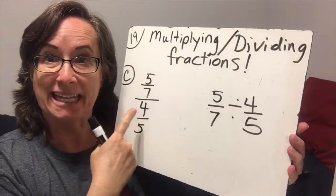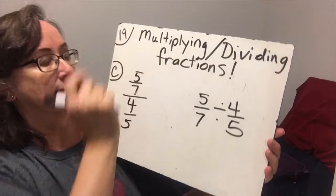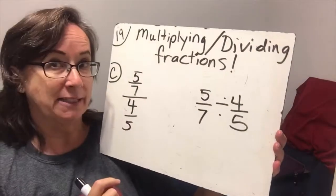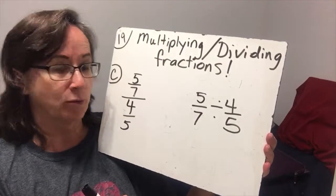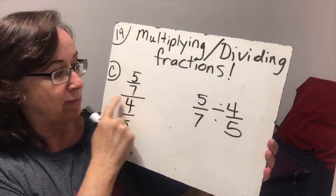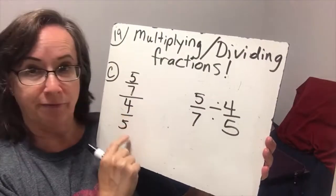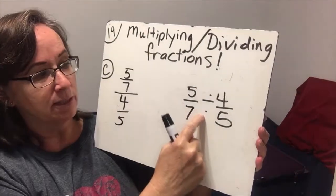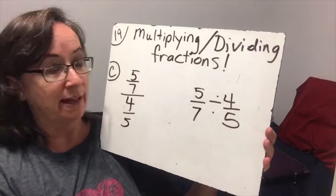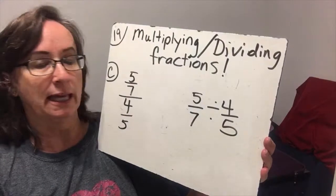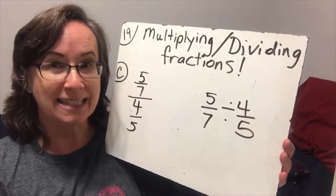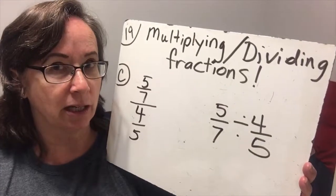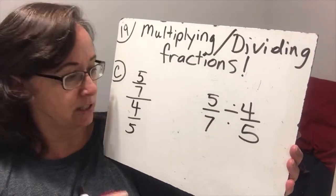So now we're on the C portion of this lesson 19. We're talking about division of fractions, and we have the same fraction in two different forms. So 5 sevenths divided by 4 fifths, or 5 sevenths divided by 4 fifths. They mean exactly the same thing.